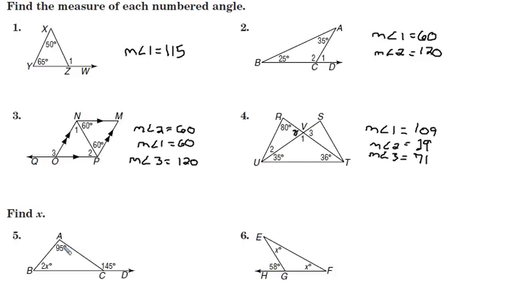And then here we are on number 5. A little bit of algebra involved here. Remote interior angles, 95 plus 2x is going to add up to 145. So I'll write that equation. 95 plus 2x will equal 145. And a little algebra. I'm going to subtract 95 from both sides. Bring down the 2x. 145 minus 95 is exactly 50. Divide by 2. x is 25.